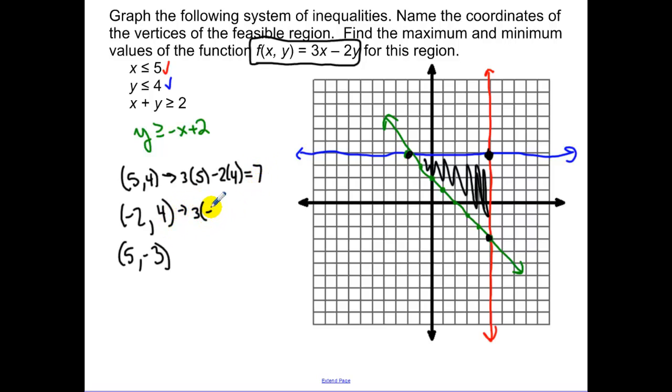3 times a negative 2 minus a 2 times by a 4. For this one, we get negative 14. And then I plug in 5, 3. So I have 3 times 5 minus 2 times by a negative 3. And that's going to be 21.